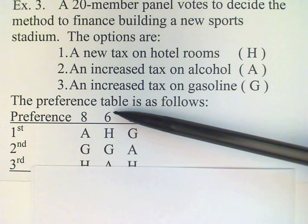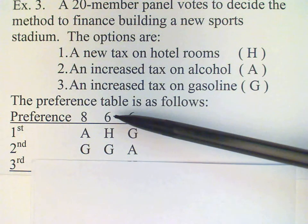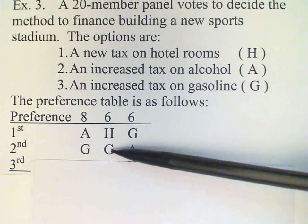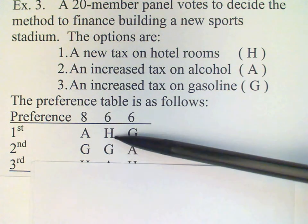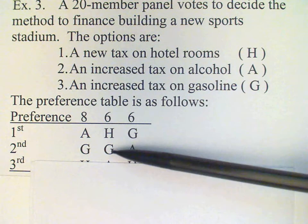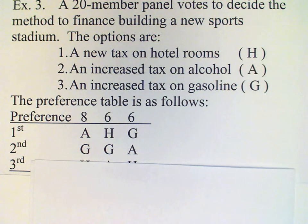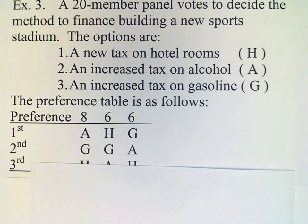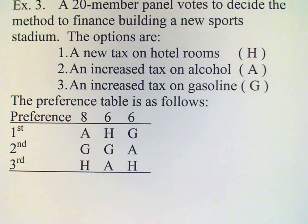These voters prefer G if they can't have H. So that means G will move up in the preference table, and we will have eight votes for A and twelve votes for G — and so we have a different winner. This illustrates how the plurality method can violate the Independence of Irrelevant Alternatives criterion.